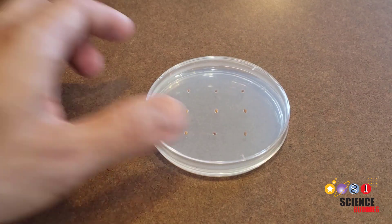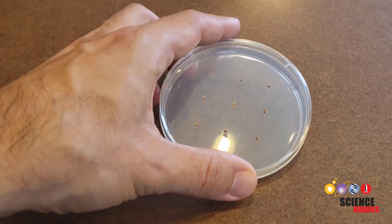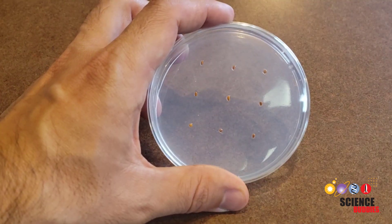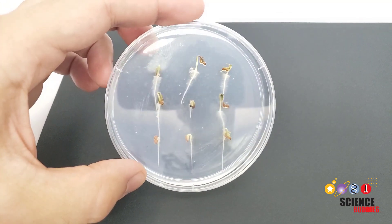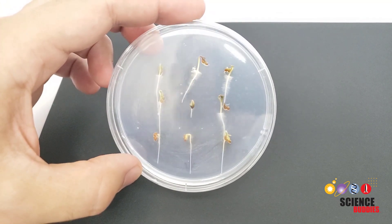For example, you can investigate how environmental factors like light and humidity affect seed germination. The clear petri dish and agar solution make it easy for you to observe the plants' roots and stems as they grow.